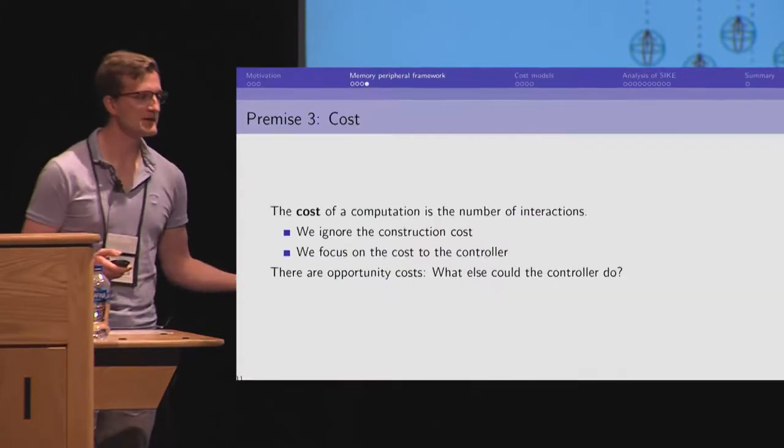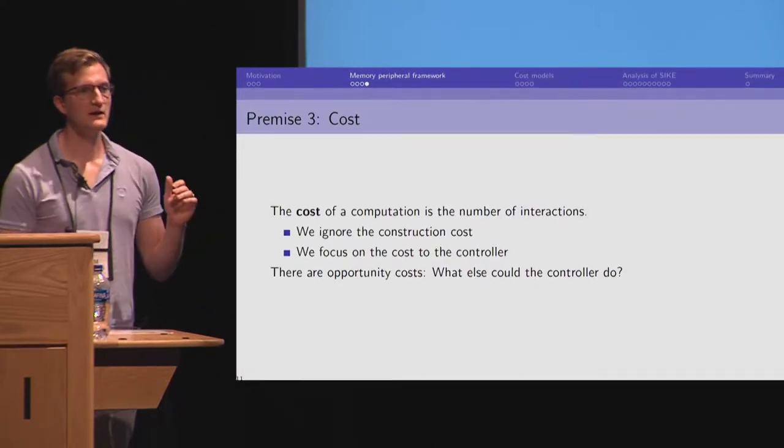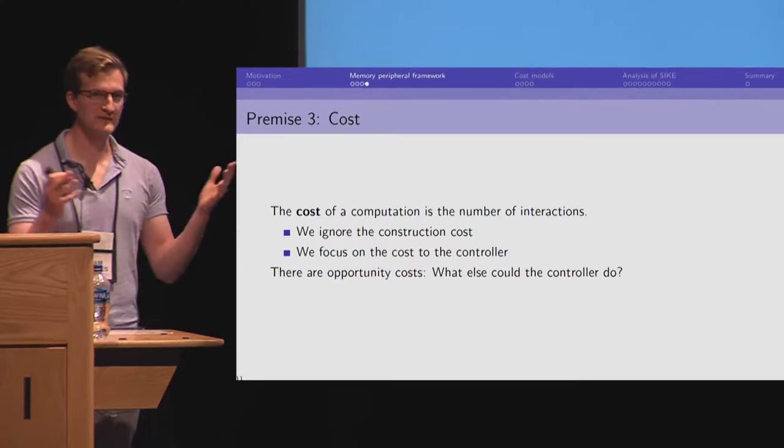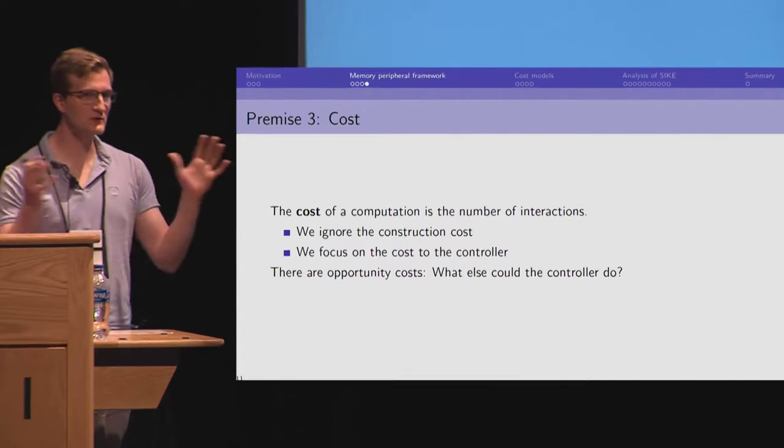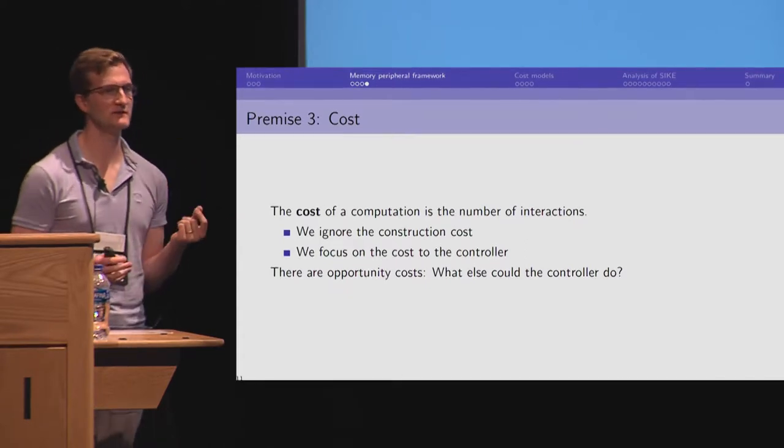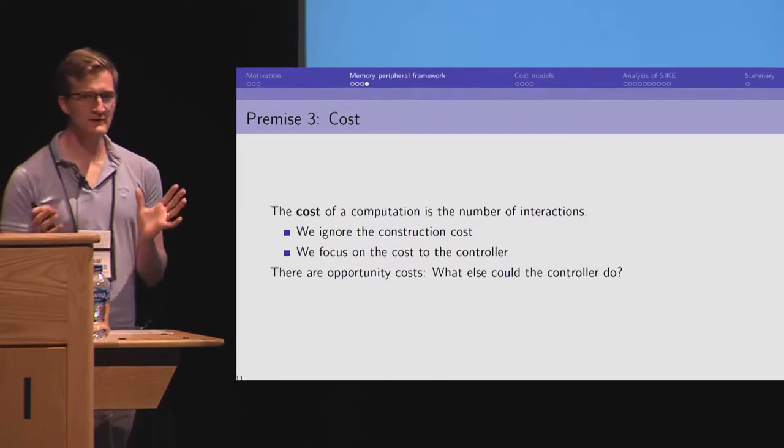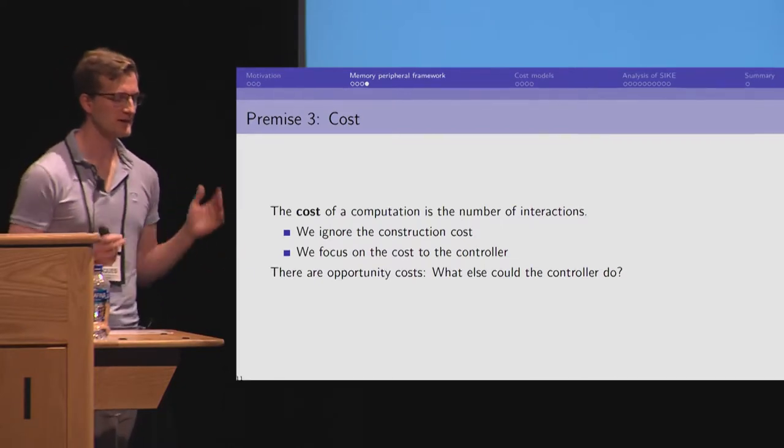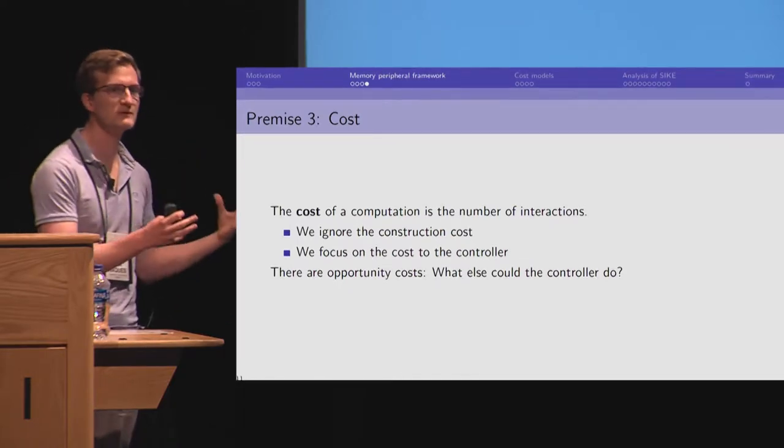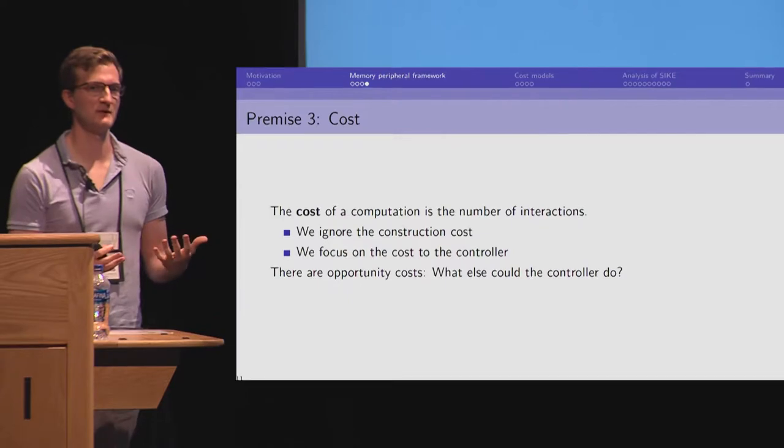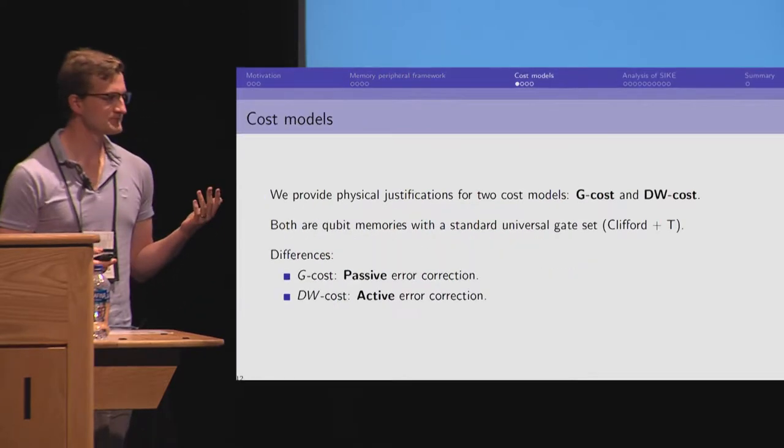And viewed in this way, this gives a cost of quantum algorithms in the number of interactions. So, a quantum computer will definitely be very expensive to build, be expensive to keep it cool and maintain it. And we ignore all of that. We only focus on the cost to the classical controller and the computations it must do. And you can think of this as an opportunity cost. We have this big classical computer that we need to run the quantum computer. What else could we do with that classical computer if it wasn't busy running the quantum algorithm?